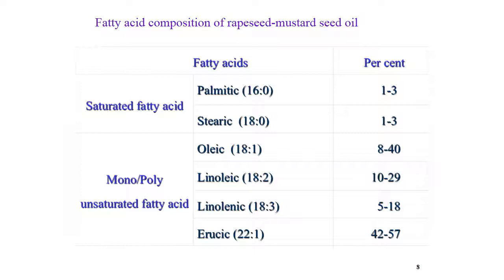Fatty acid composition of rapeseed and mustard: saturated fatty acids — palmitic acid 1 to 3%, stearic acid 1 to 3%. Monounsaturated and polyunsaturated fatty acids: oleic acid 8 to 40%, linoleic acid 10 to 29%, linolenic acid 8 to 18%, and erucic acid 42 to 57%.